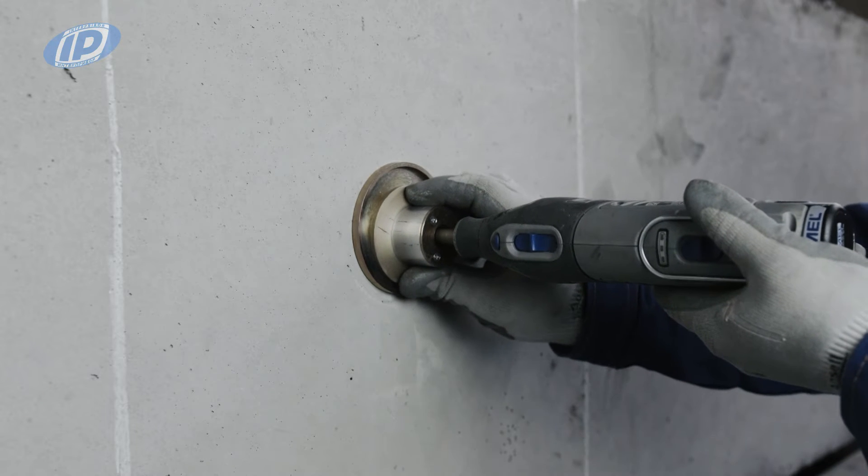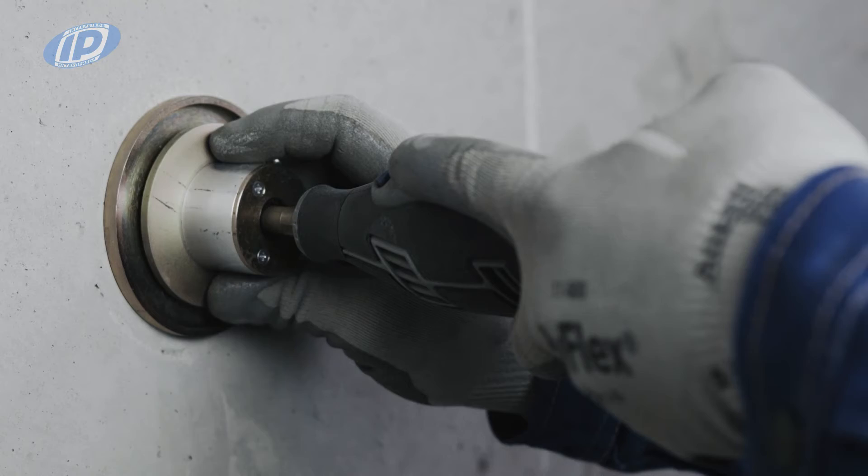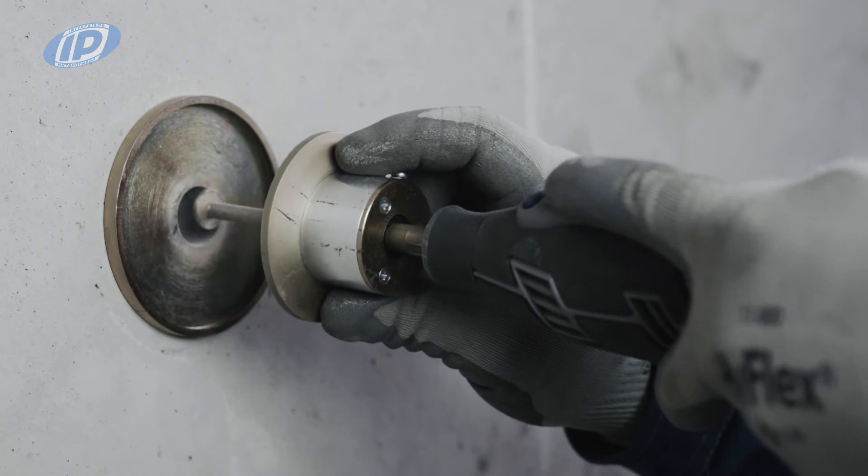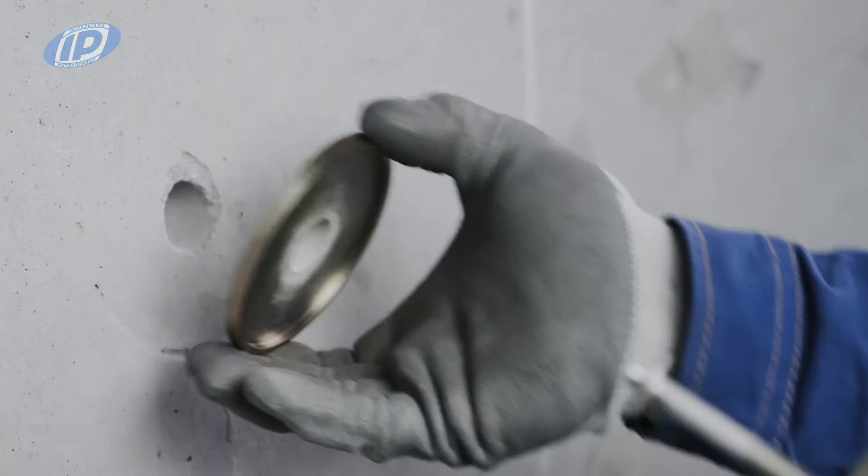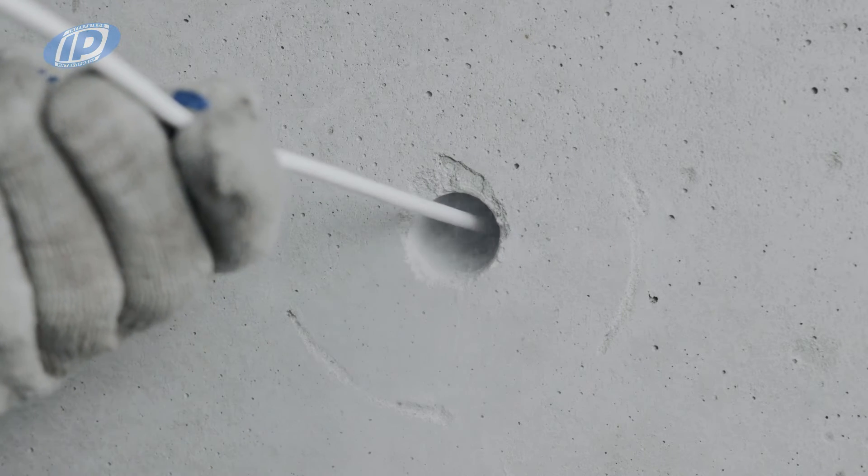After 10 to 15 rotations, stop the drive and carefully, without jerking, take out the boring unit from the borehole. Clean the borehole from crushed concrete and dust by blowing it with compressed air.